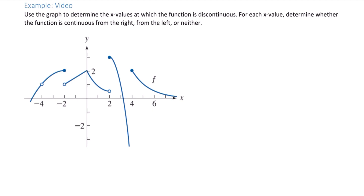Reading the graph from left to right, our first discontinuity occurs at negative 4. We want to ask: is it continuous from the left, the right, or neither? It looks like it's going to be neither, because f of negative 4 is not actually defined.